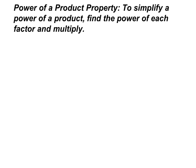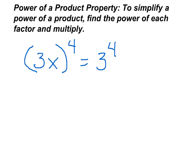Power of a product property. To simplify a power of a product, find the power of each factor and multiply. If you have 3x to the 4th power, that 4th power applies to each value, so you could rewrite this as 3 to the 4th times x to the 4th.